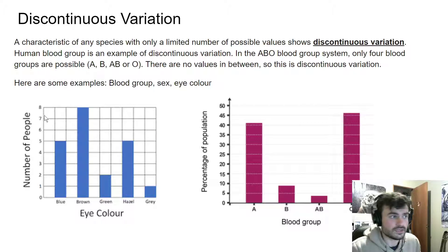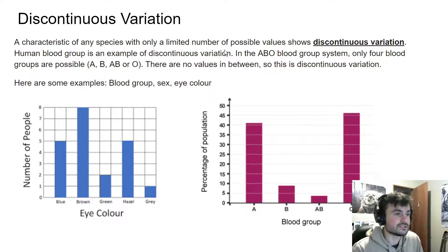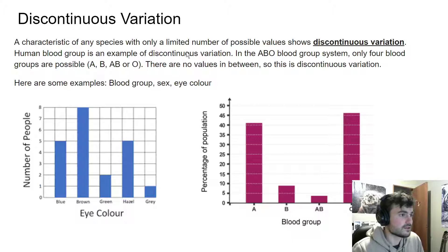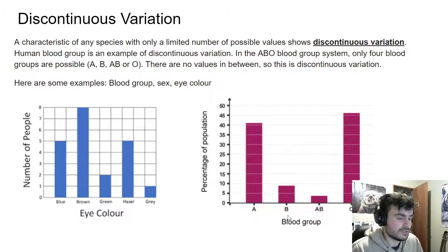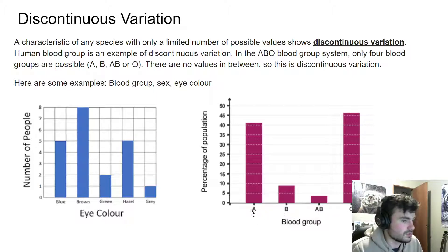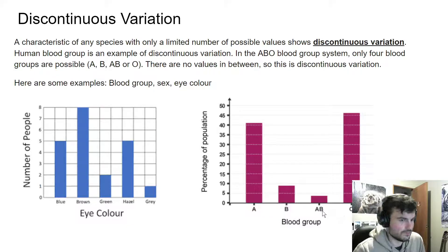Discontinuous variation is a characteristic with only a limited number of outcomes. So blood type shows discontinuous variation — you could be A, B, AB, or O. There is no in-between; you can't be half O and half AB. You're one or the other.